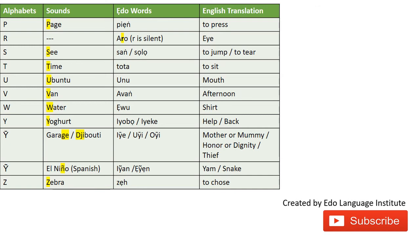The P sound, as in 'page': we have 'PIA,' with a slightly nasal N at the end — 'PIA' is the EDO word for to press. Now the R sound in EDO is always silent — a single R is always silent — so I cannot find an English equivalent for that. If you know of any other language where the R sound is silent, please leave a comment below.